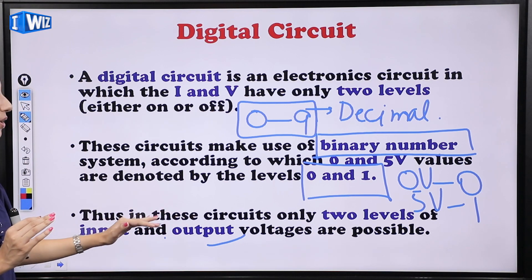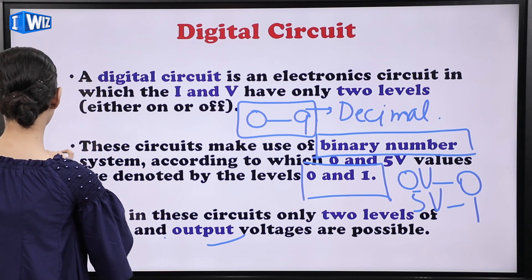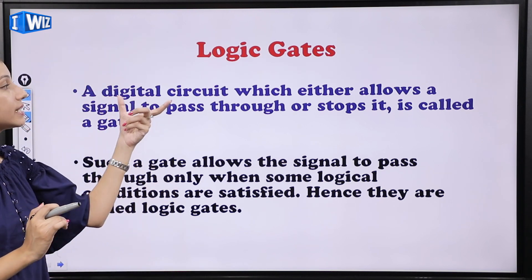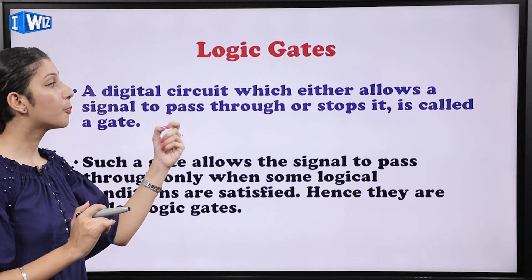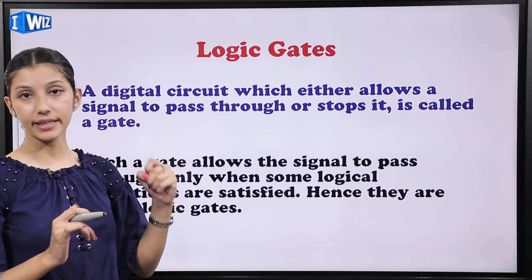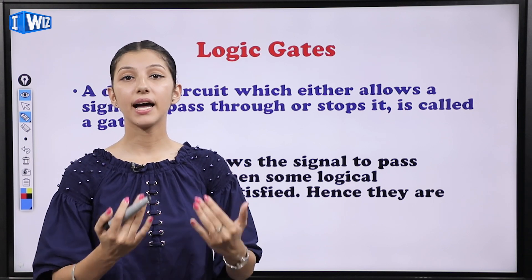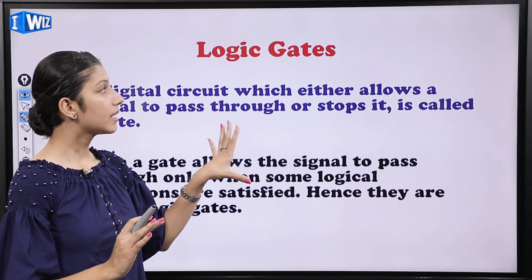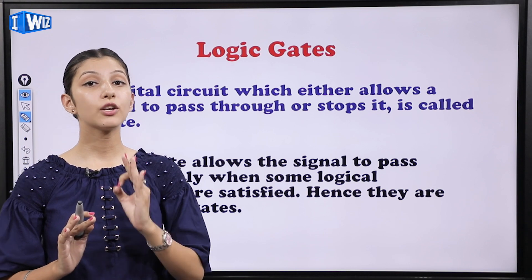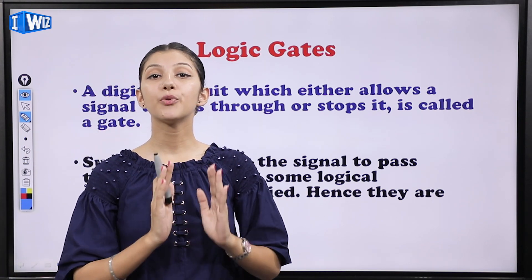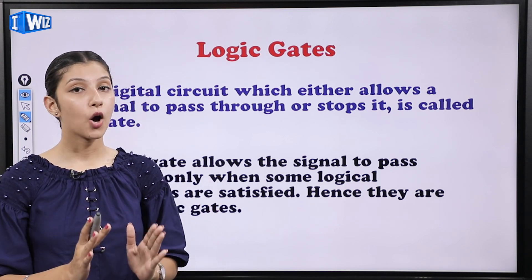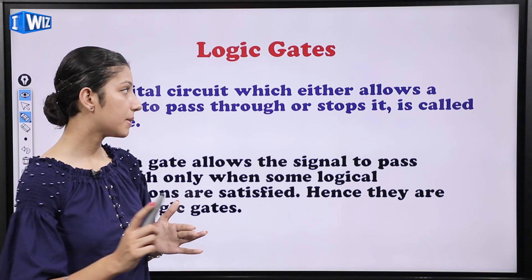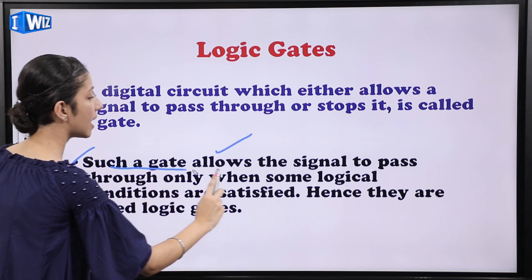Thus, in these circuits only two levels of input and output voltages are possible. Logic gates — this is a very important as well as very simple topic. A digital circuit which either allows a signal to pass through or stop it is called a gate. Just like a physical gate — if it is open you can go inside, if it is closed you cannot.